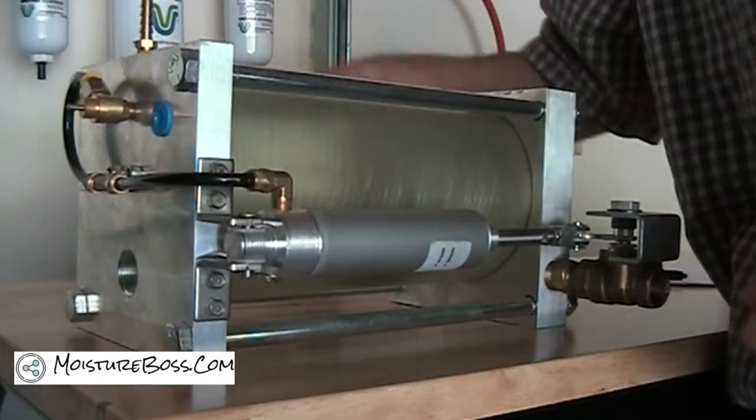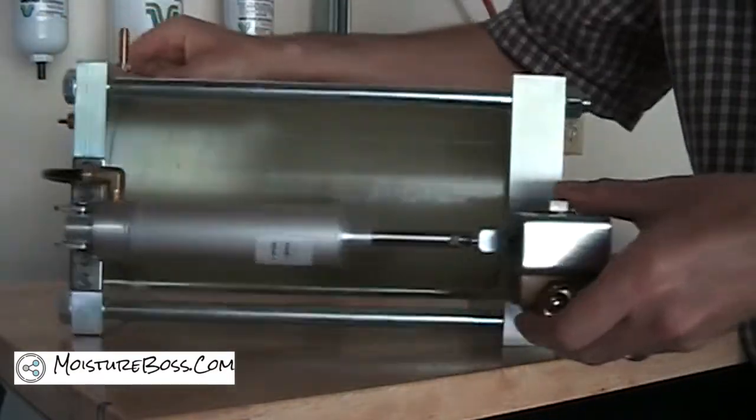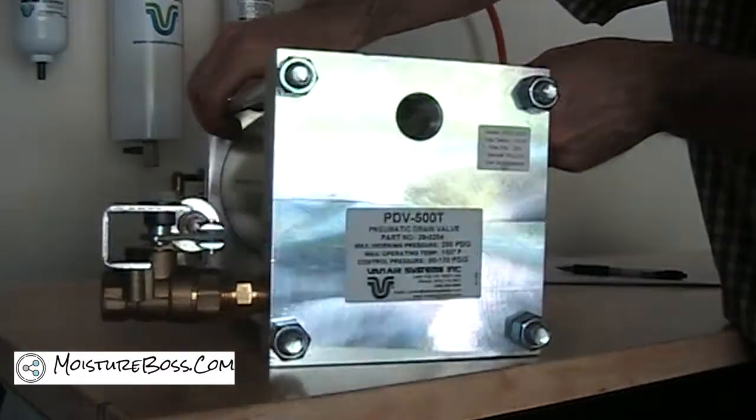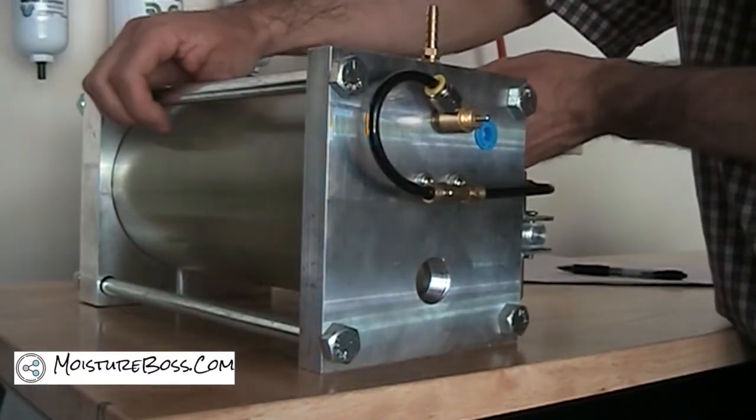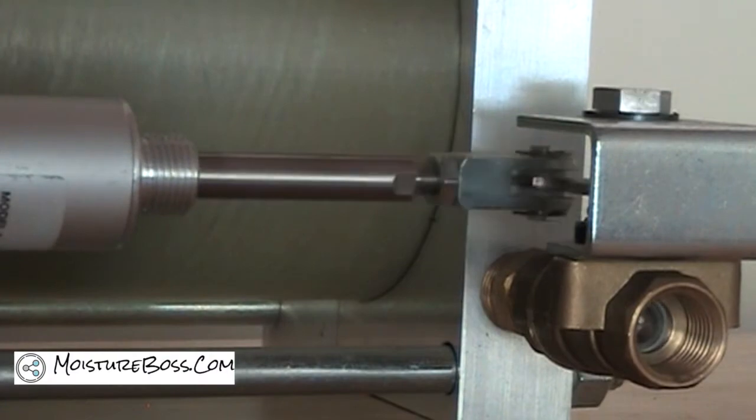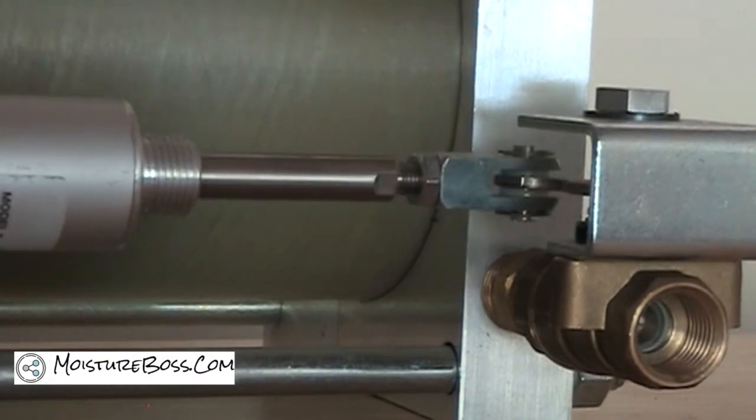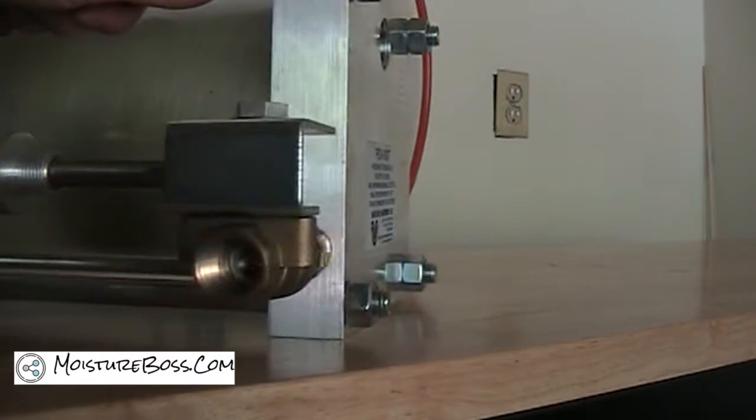This is the PDV 500T automatic drain valve from Vanair Systems. It's a fully pneumatic, zero air loss drain used for receiver tanks, coalescing filters, water separators, after coolers and refrigerated air dryers.